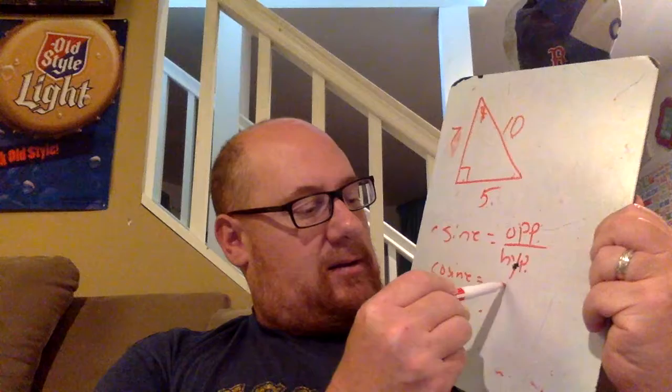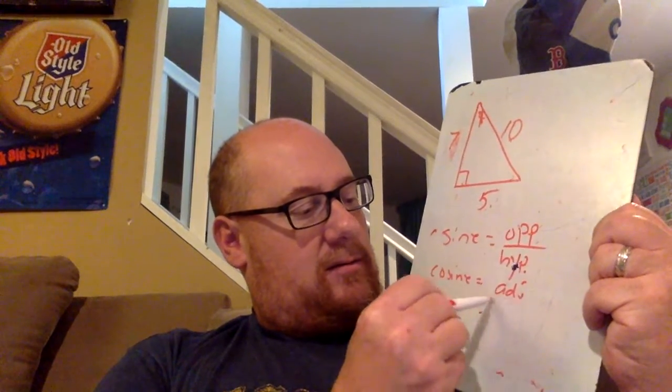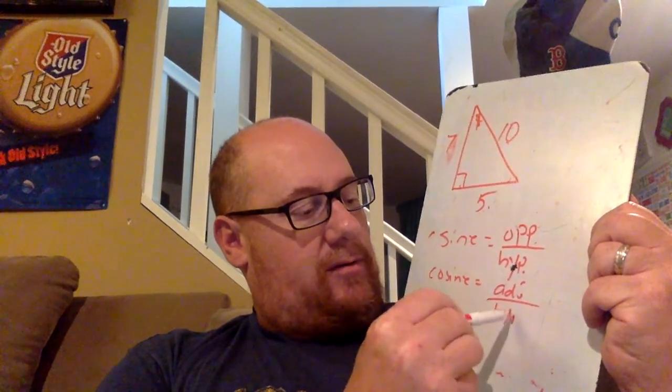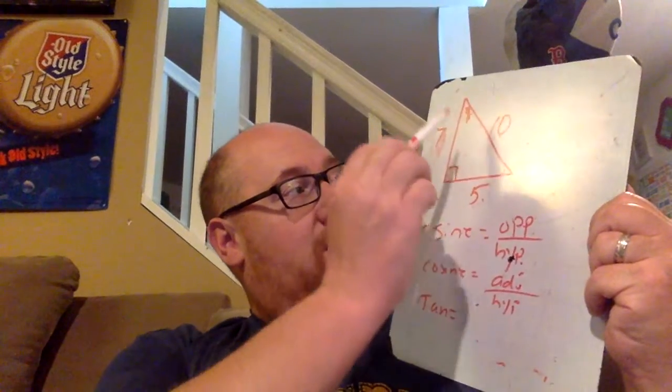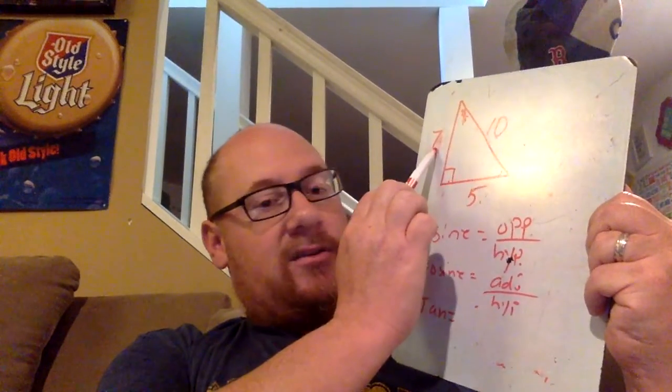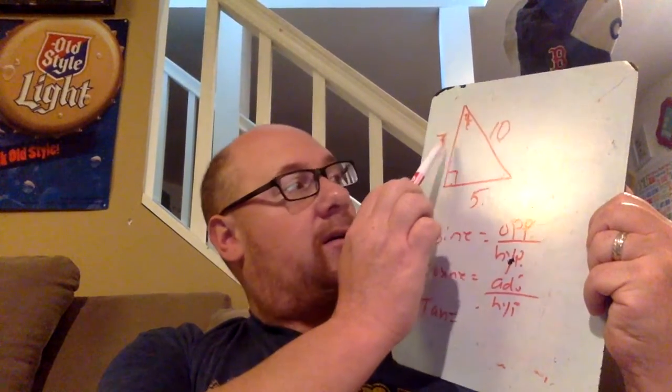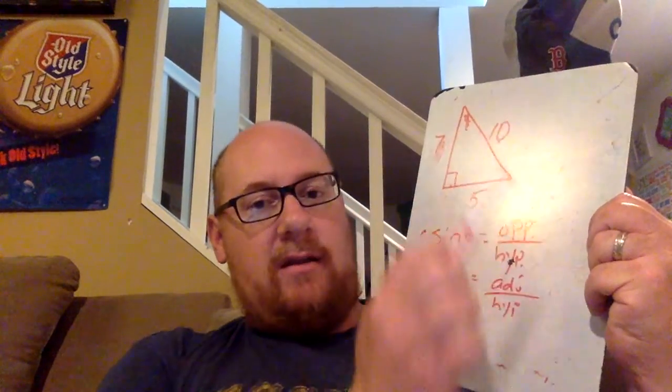Cosine is adjacent over hypotenuse. Adjacent is next door. So if I'm looking at angle 1, it would be 7 over 10.